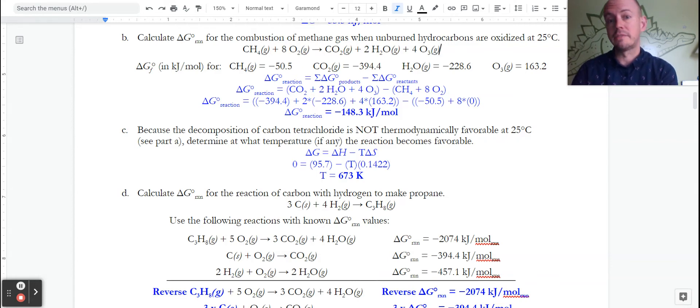So we do have an overall negative. It could be negative 148.3 kilojoules, negative 148.3 kilojoules per mole reaction. Both of those would be acceptable.